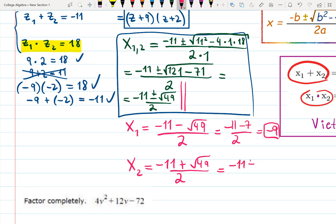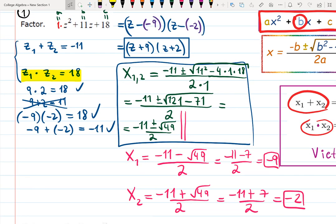And minus 11 plus 7 over 2, minus 11 plus 7, that's minus 4, minus 4 over 2, it's minus 2. And you got the same roots we got before. That's the idea.